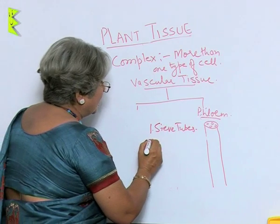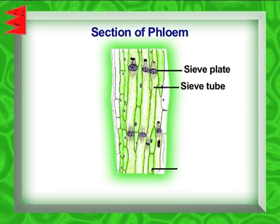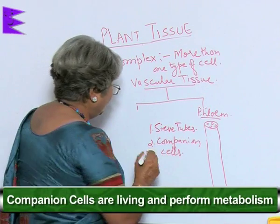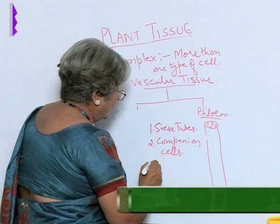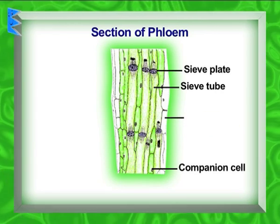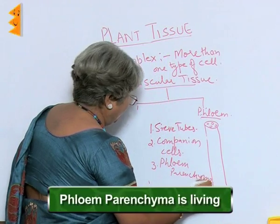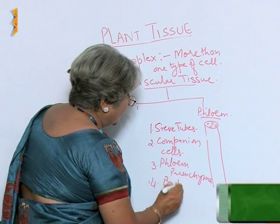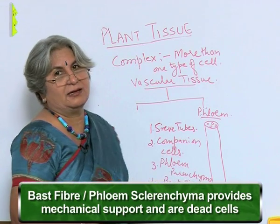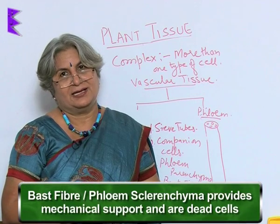After sieve tubes there are companion cells — they are living and they perform the metabolism. Then there is phloem parenchyma, which is also living. And lastly, bast fiber, or the phloem sclerenchyma, which provides mechanical support and these are dead cells.